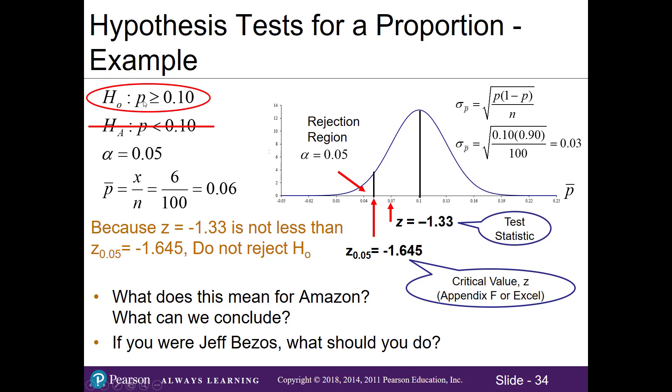This is saying that the population proportion of Amazon customers that are dissatisfied is greater or equal to 0.10. That means Amazon's claim of having less than 0.10 customers dissatisfied is not true. That's a problem. We have more dissatisfied customers than we think. If we were Jeff Bezos, what could we do? Perhaps we need to train our employees for better customer service or change our return policy or change something about the business to make things better, make our customers less dissatisfied.